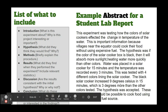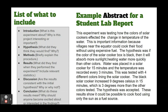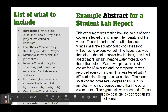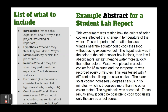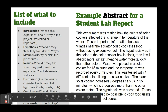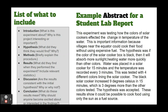For results: 'The black solar cooker increased nine degrees Celsius in 15 minutes, which is three degrees higher than the other colors tested.' The hypothesis was accepted. Then for the conclusion: 'These results show it could be possible to cook food using only the sun as a fuel source.' That's answering what the results mean and why anyone should be excited or interested in the findings.